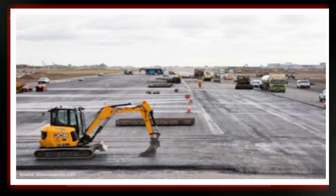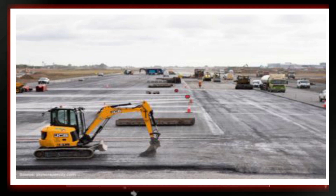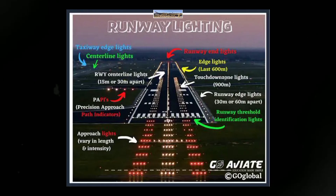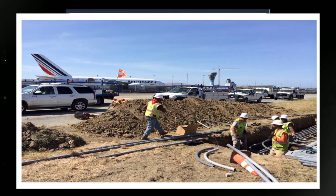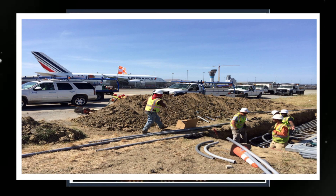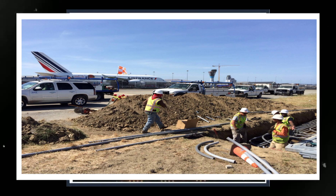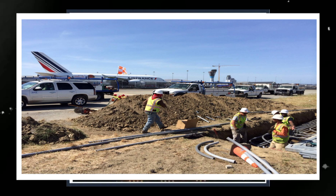What is the function of approach lights in airport runways? The approach lighting system, commonly known as approach lights, is a crucial component of an airport's lighting infrastructure. It is installed at the beginning of the runway and extends outward to guide pilots during their final approach and landing. Approach lights serve as a visual reference for pilots during their final approach to the runway. They are especially important during low visibility conditions, such as fog, rain, or darkness, when the pilot's ability to see the runway and its surroundings may be limited.